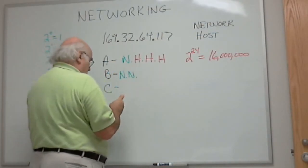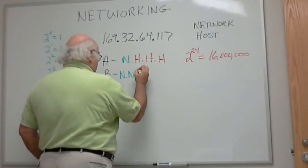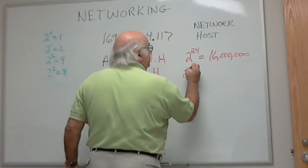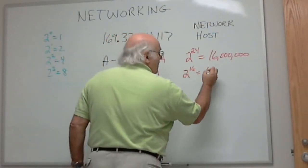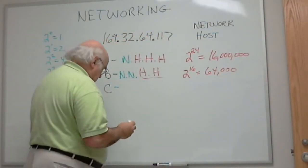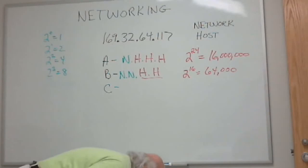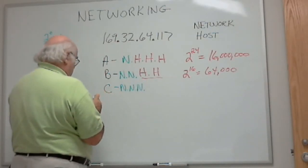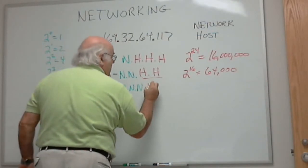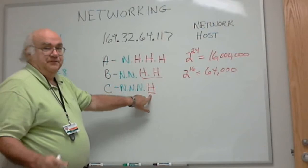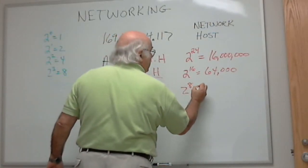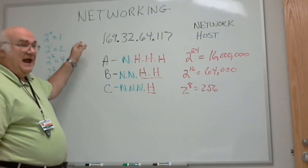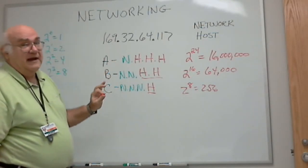Now the Class B, where we had two network bytes, we had two left for the hosts - 8, 16. We can have two to the sixteenth, which is about 64,000. Getting to Class C, we had three octets that were network, so we only had one left over for the host. Eight bits. Two to the eighth power equals 256. This was classical, or classic, classful addressing that we used for years and years. But we're running out of address spaces.